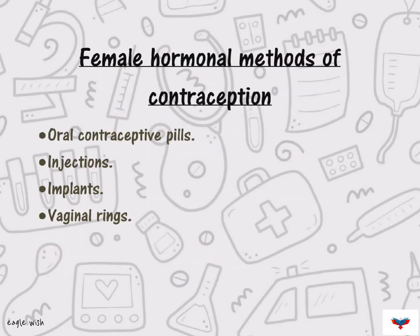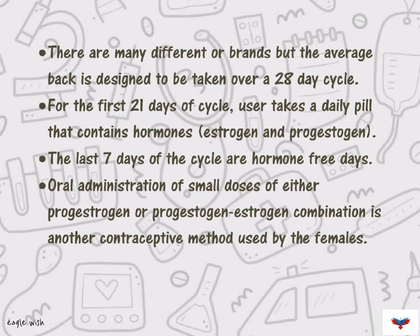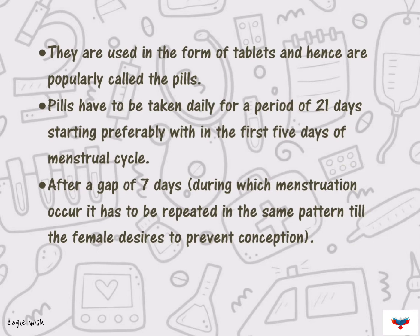Female hormonal methods of contraception include oral contraceptive pills, injections, implants, and vaginal rings.